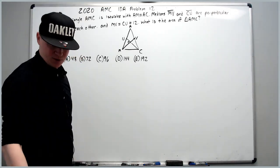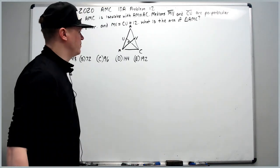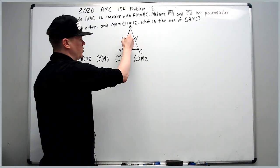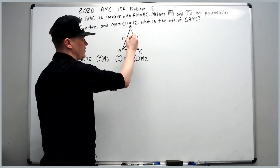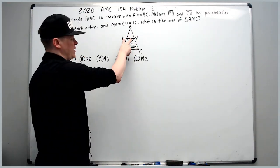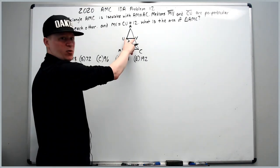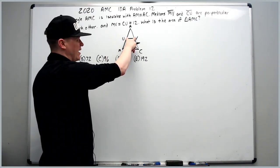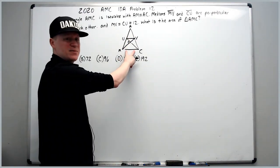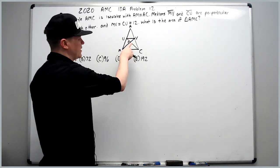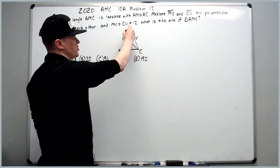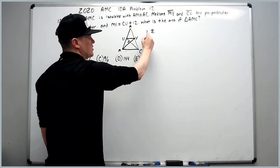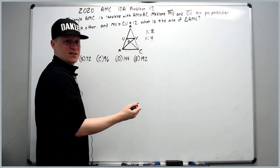There are several things you can do in this problem. What I want to do is connect U to V, because that will be parallel since these are midpoints. When you connect the midpoints of a triangle, it's called the midsegment, and the ratio of UV to MC will be one to two. Because it's one to two, the ratio of triangle AUV to triangle AMC is one to four based on similarity.